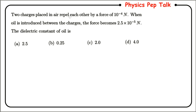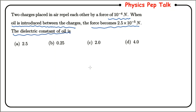Next question: two charges placed in air repel each other by a force of 10 to the power of minus 4 newtons. When oil is introduced between the charges, the force becomes 2.5 into 10 to the power of minus 5 newtons. Find the dielectric constant of oil. The dielectric constant K is defined as the force in air divided by the force in the given medium.